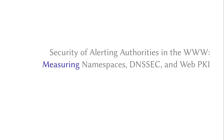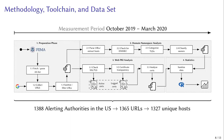Now that we have our threat model and understand the role of DNS and WebPKI ecosystems, we can move on to applying it to actual alerting authorities. We start our measurements with the list of alerting authorities provided by FEMA, which comprises 1,388 alerting authorities as of September 2019. We mapped these to 1,365 URLs and in turn to 1,327 unique hosts. We executed measurements from October 2019 up to March 2020 from various vantage points in Europe and the US.